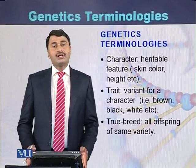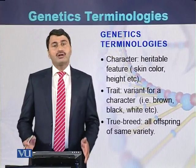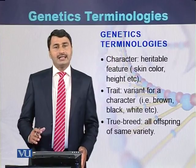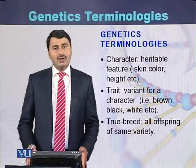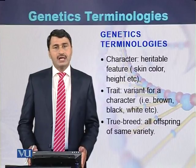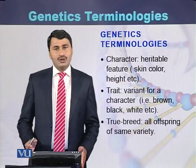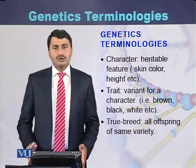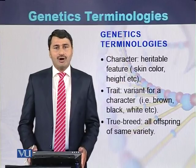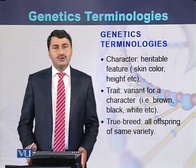While true breed — if all the offspring produced are of the same variety, like tall plants will produce tall offspring and short plants will produce short plants, those varieties are called true breeds.